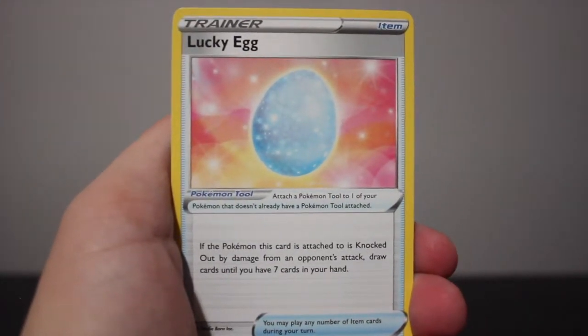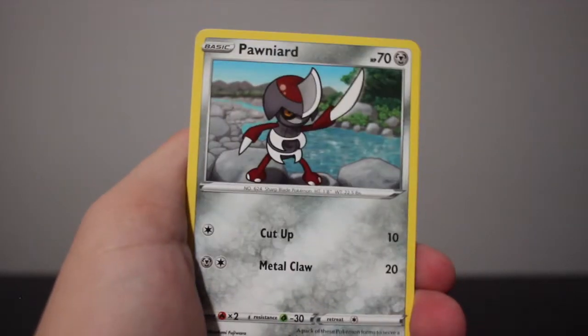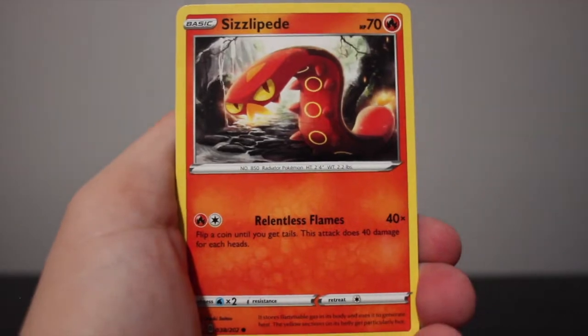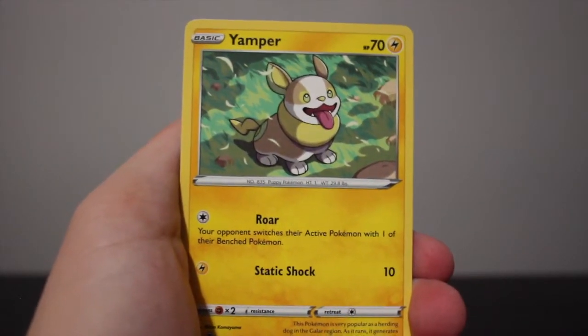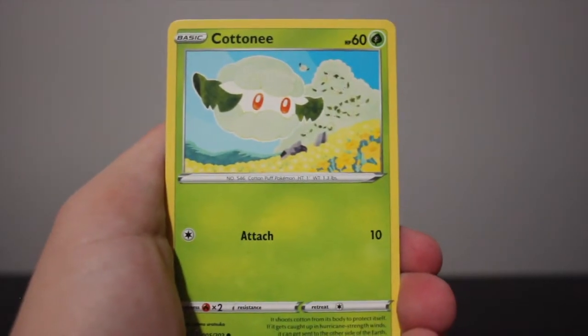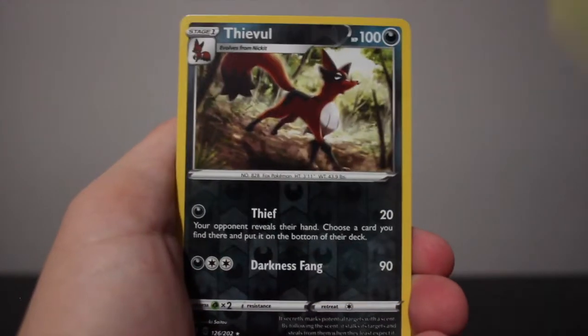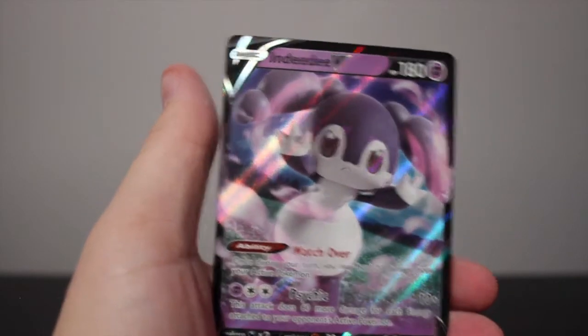Alrighty, Rare Candy, a Lucky Egg, Mantine, Bunnelby, Sizzlipede, Yamper, Clobbopus, Combee, Tranquill, and we got an Indeedee V for rare in that one.